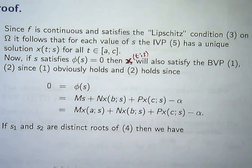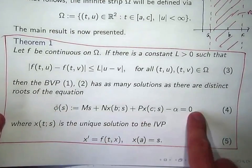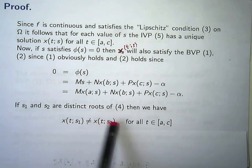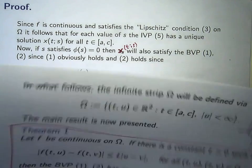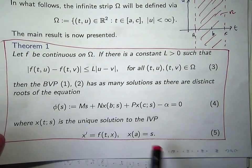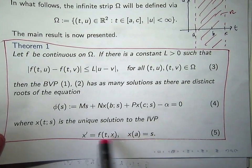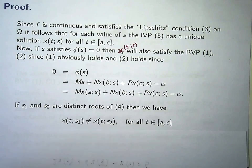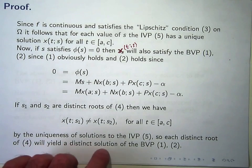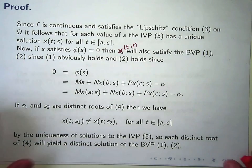Now, if s1 and s2 are distinct roots of the equation 4, then we have the following. Essentially, these two solutions cannot touch. This is a consequence of the uniqueness of solutions to this problem. If we have different initial conditions, then the two solutions cannot touch at any point in the future or in the past. So this is true by the uniqueness of solutions. So each distinct root of 4 will yield a distinct solution to our boundary value problem. So that's the first half of the proof.